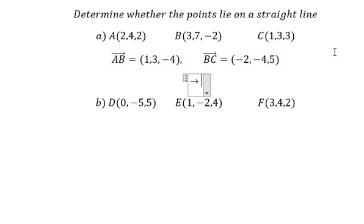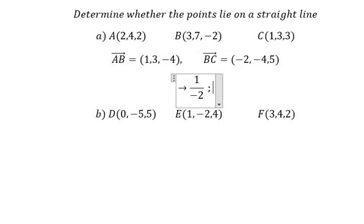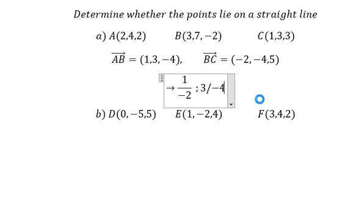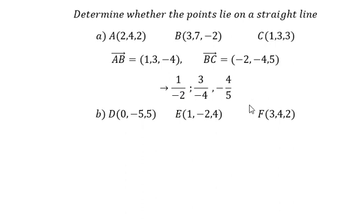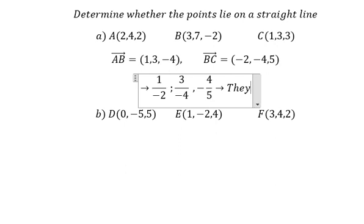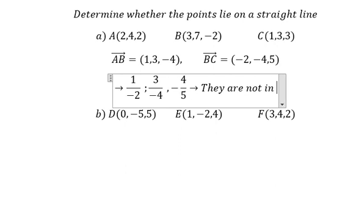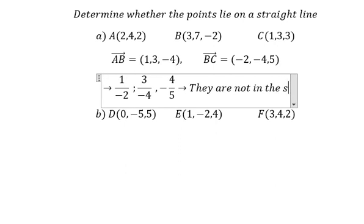So we have 1 divided by negative 2, then 3 divided by negative 4, and negative 4 divided by 5. We can see that all three fractions are not the same, so that means they are not on the straight line.